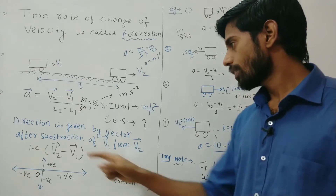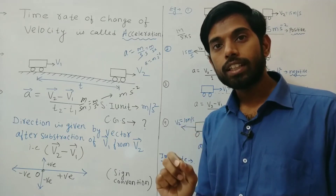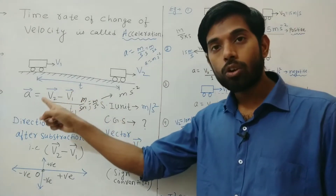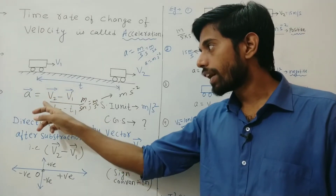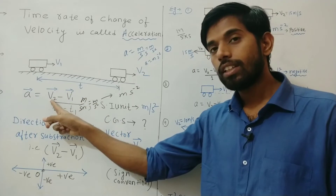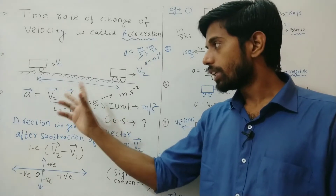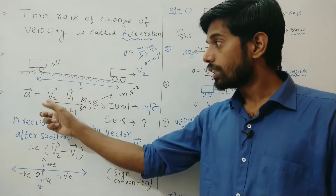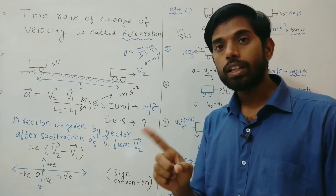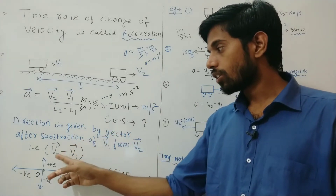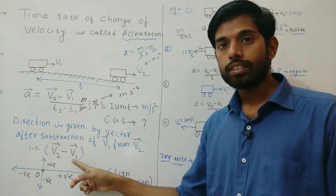Now a very important term — the direction of acceleration. The direction of acceleration is neither along v1 nor along v2, but along the vector (v2 − v1). It is a vector quantity. The difference between these two velocities gives the direction of acceleration. You can find the direction by vector subtraction of v2 minus v1, which you will learn in a higher section.